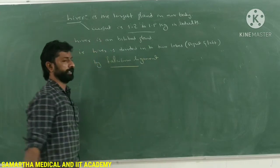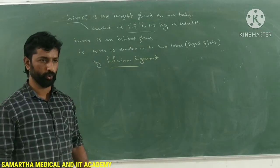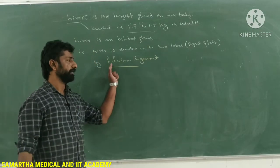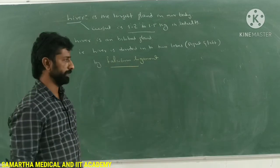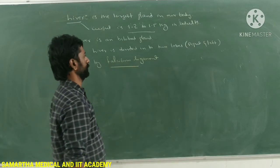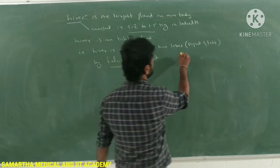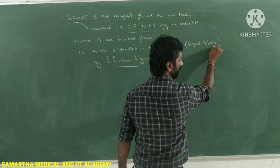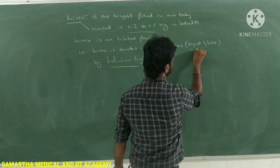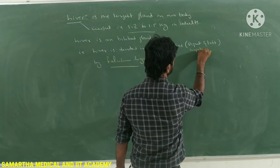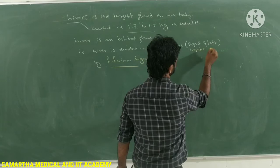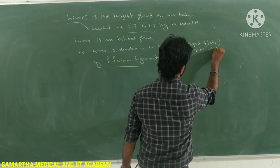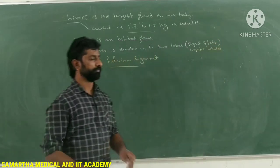The ligament which divides the liver into two lobes is called the falciform ligament. These two lobes are called the right and left hepatic lobules. Each lobe is referred to as a hepatic lobule.